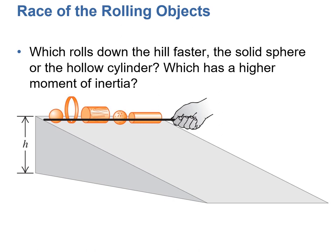Let's look at the race of rolling objects. Which rolls down the hill faster, the solid sphere or the hollow cylinder? Now, hollow cylinder is a thin-walled hollow cylinder. Which has a higher moment of inertia? Because if it has a higher moment of inertia, it's slower. If it has a smaller moment of inertia, it's faster.